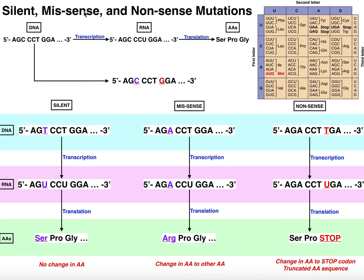These are three different kinds of mutations that you can have in a gene, but they have different effects. Silent mutations really don't have any noticeable effects, and we'll talk about what each of these is and why.